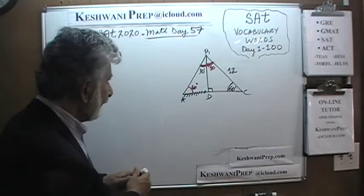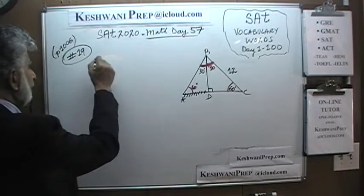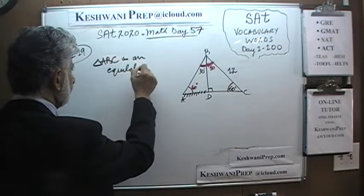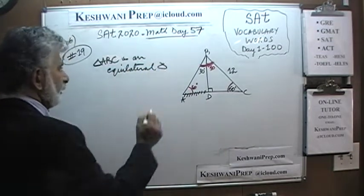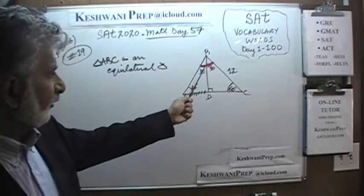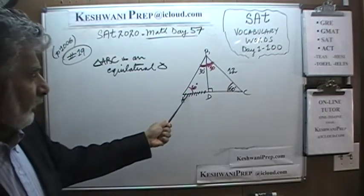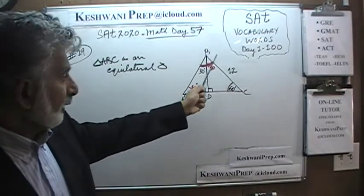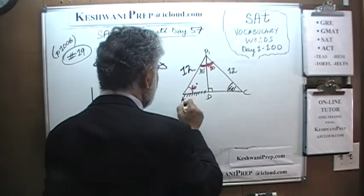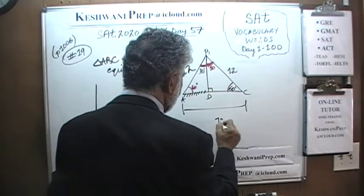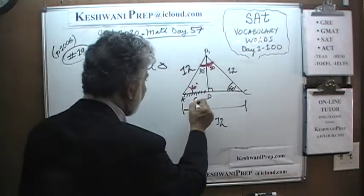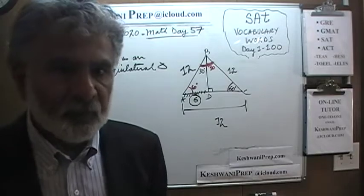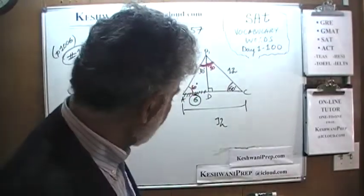So triangle A, B, C is an equilateral triangle, because all angles are 60 — this is 60, this is 60, and this would have to be 60. Therefore all sides are equal to 12, since this side is 12. B to C is 12, A to B is 12, A to C is 12 — and half of A to C is 6. The answer: A to D is 6. That is the more straightforward method.